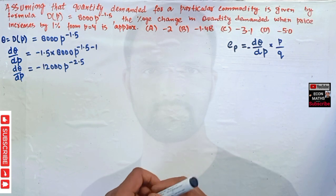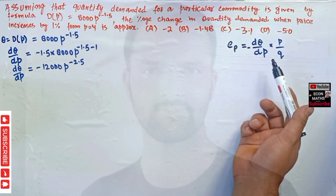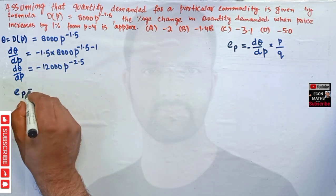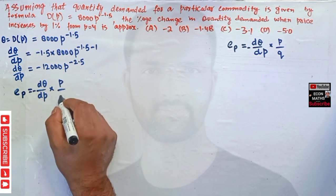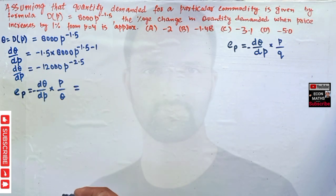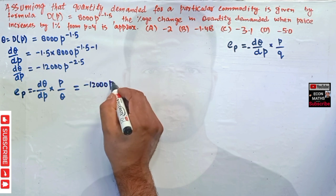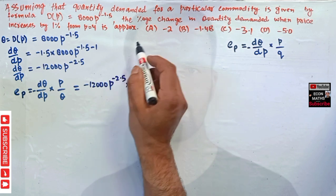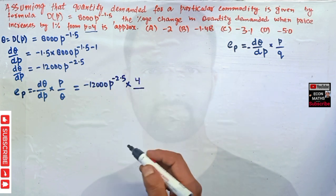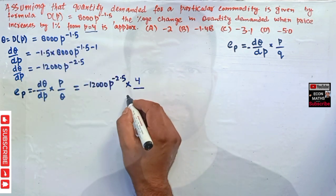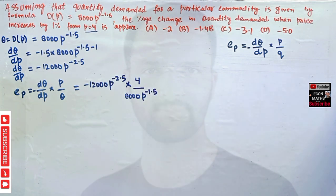Now we use the elasticity formula. Elasticity of price = (dQ/dP) * (P/Q). Substituting our values: dQ/dP = -12,000 * p^(-2.5), our original price P = 4, and in place of Q we use our demand function 8000 * p^(-1.5).